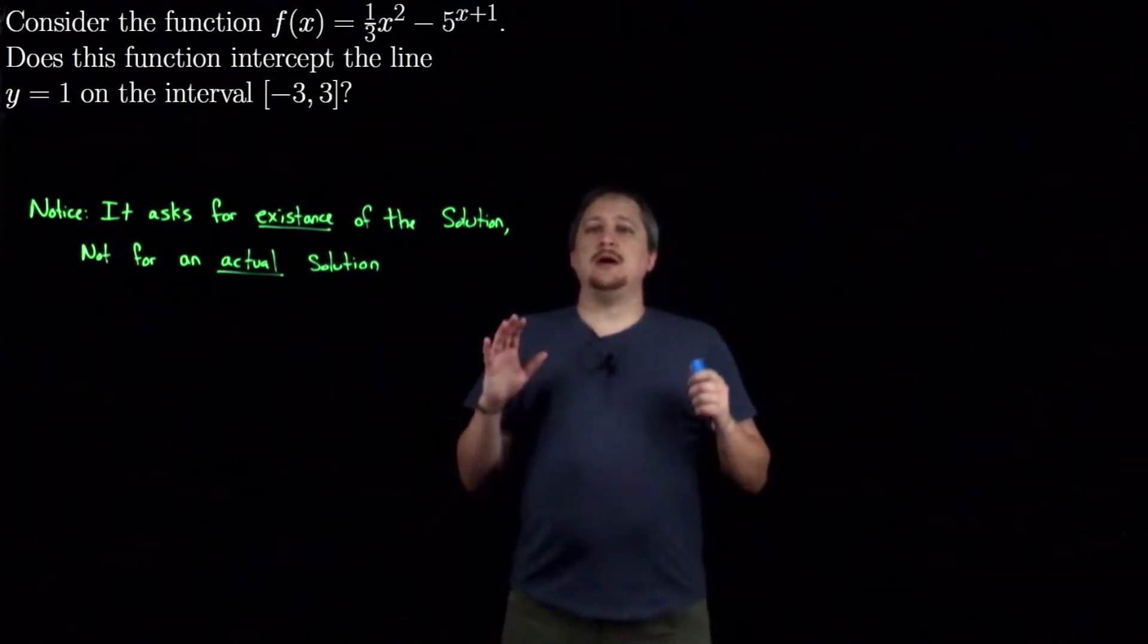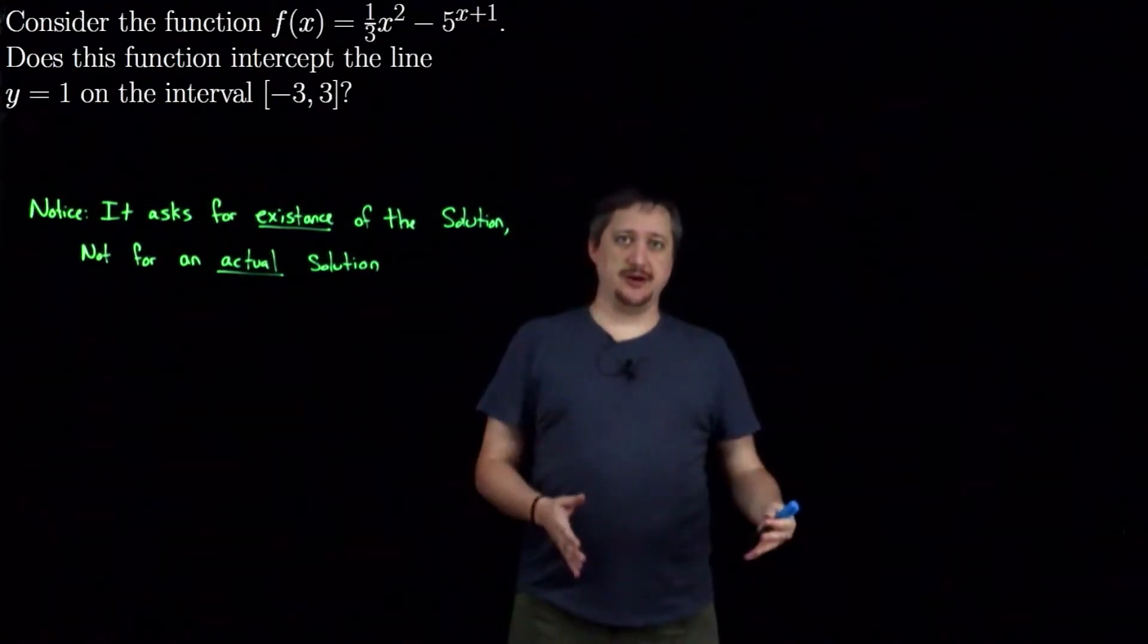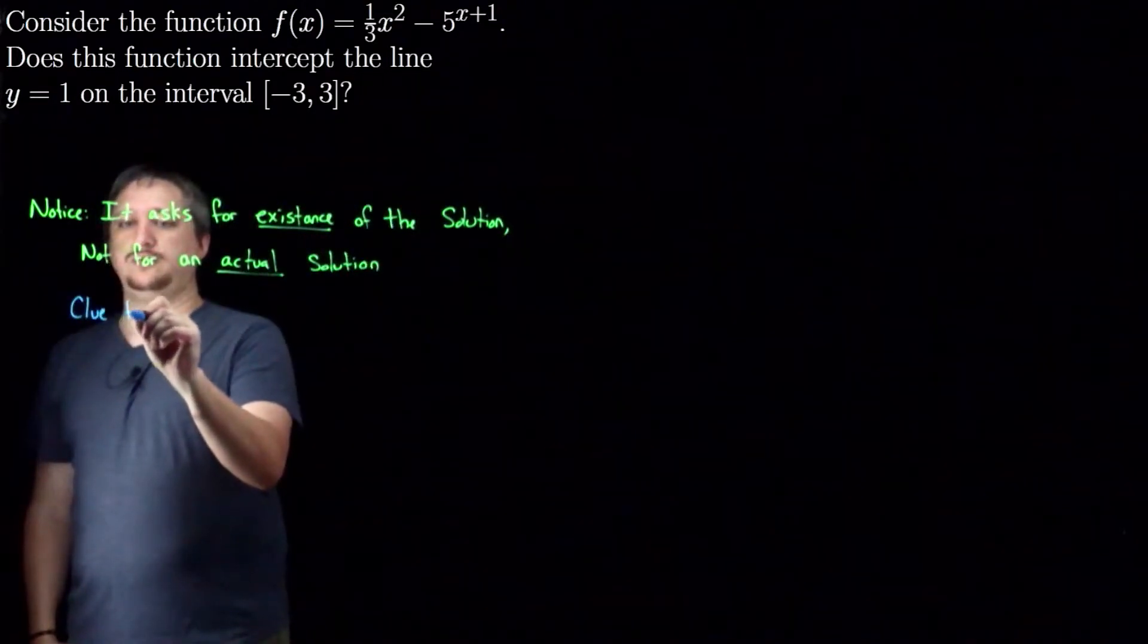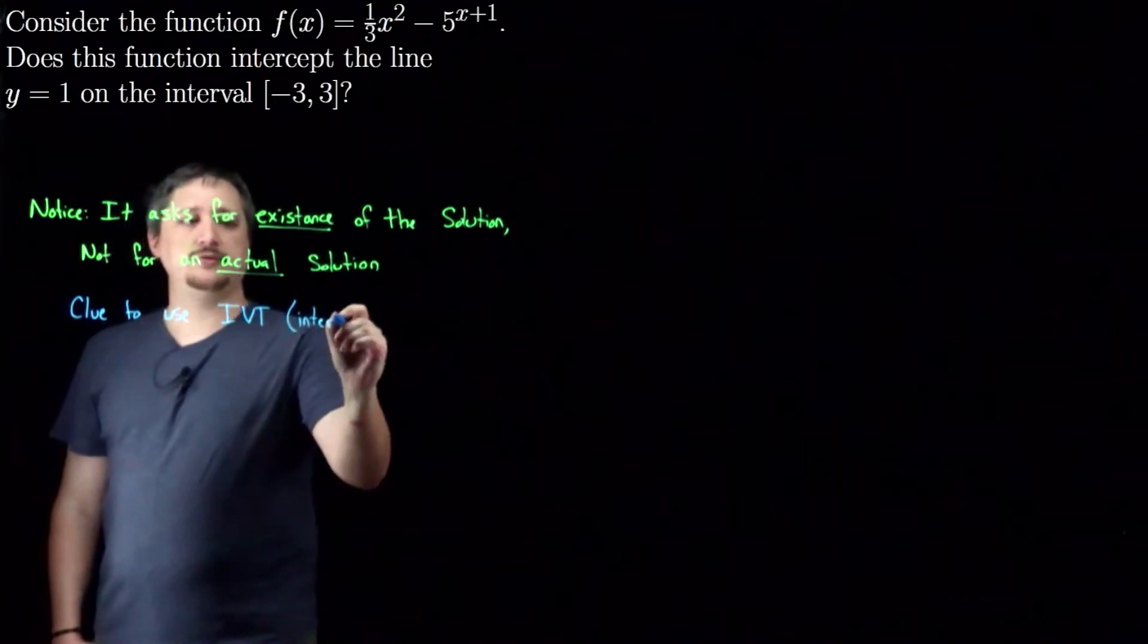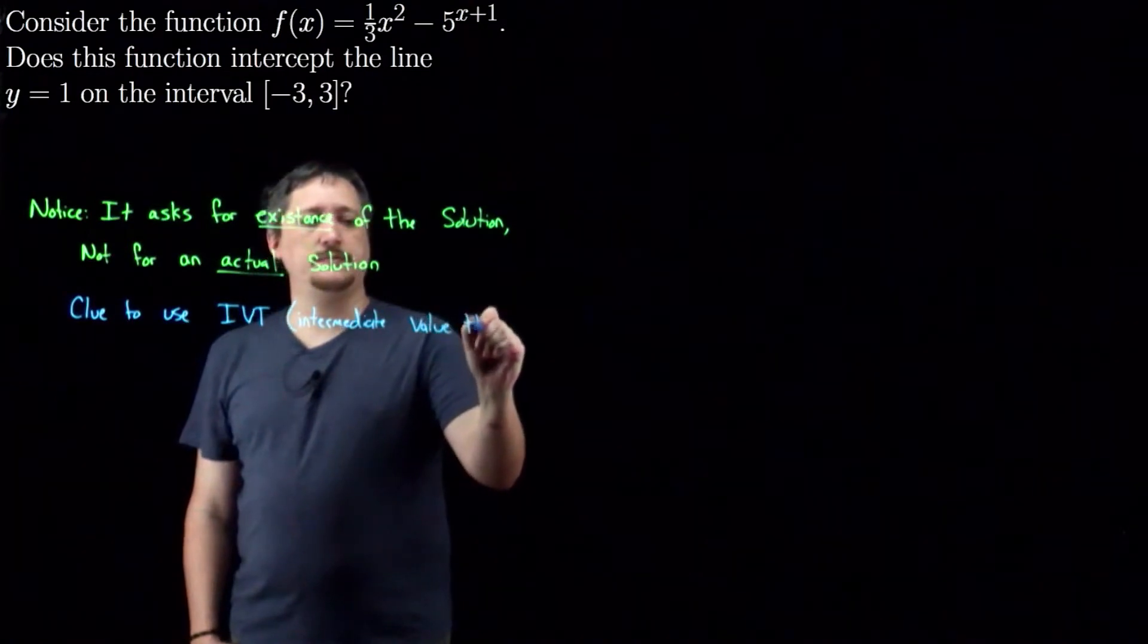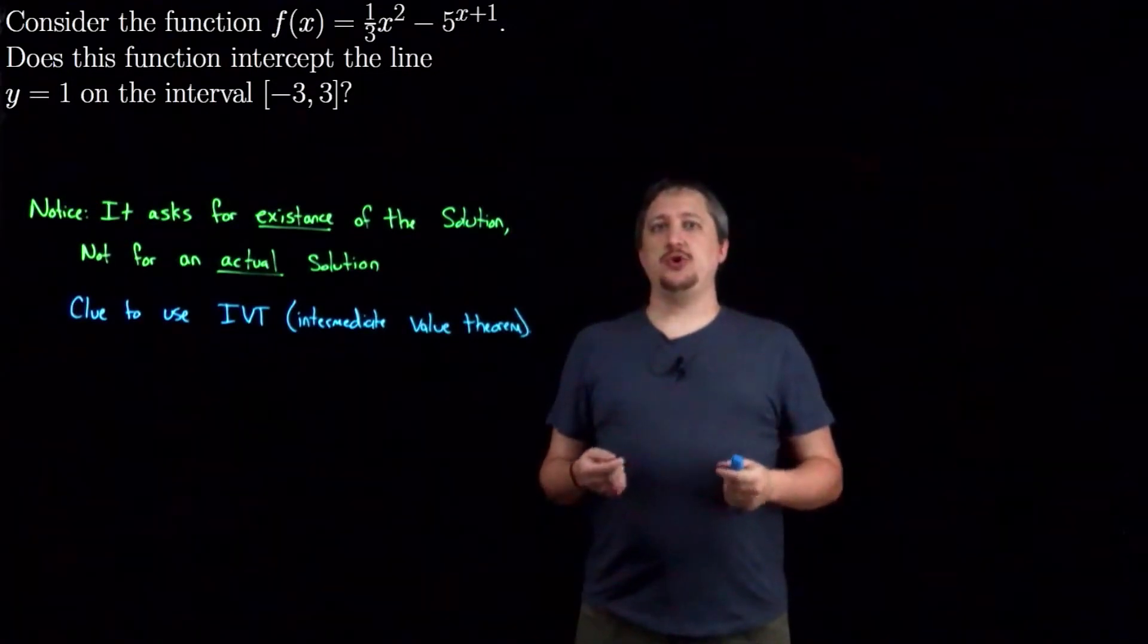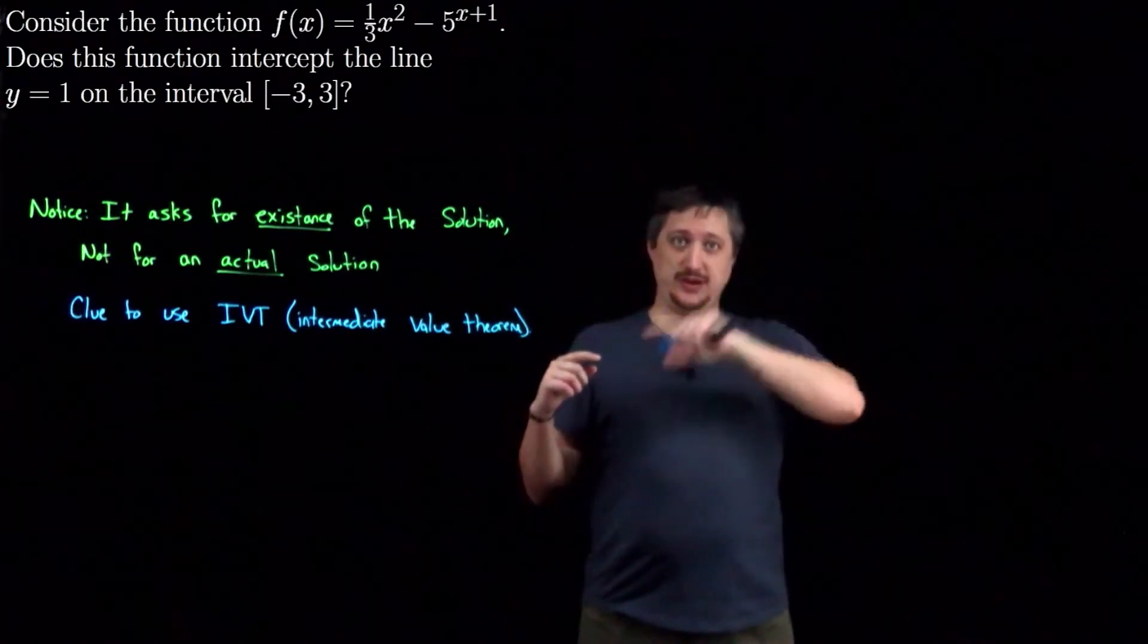The reason this is important is that this opens up the avenue for using existence theorems, theorems that tell you a thing exists. In particular this lets us use the intermediate value theorem (IVT). Remember what the intermediate value theorem says is that if you have a function that is continuous and you know two y values that it hits, between the x values where it hits those things, it has to hit everything in between.